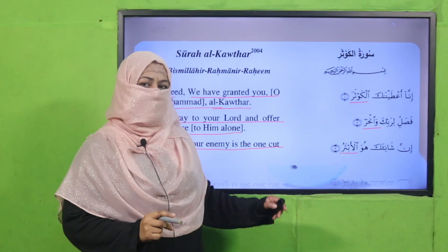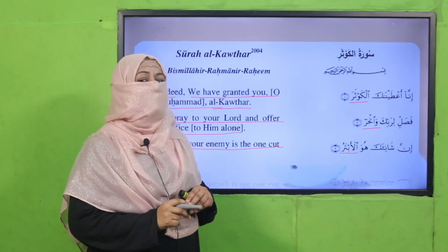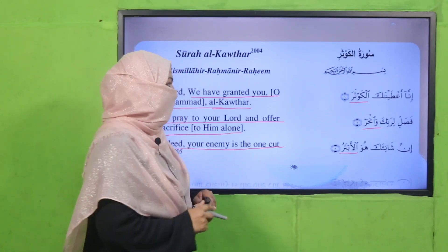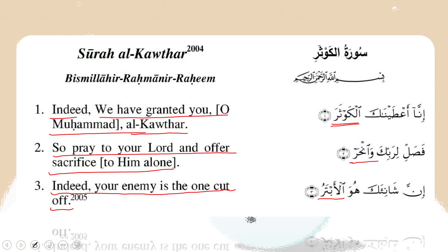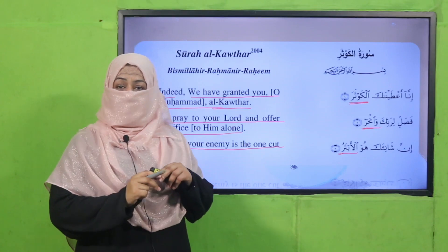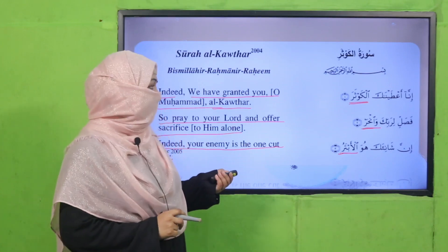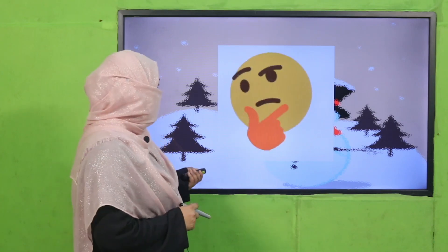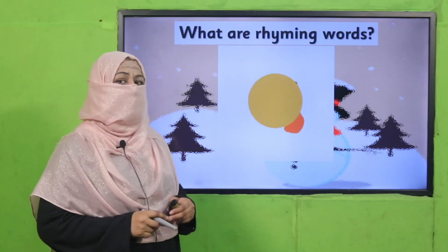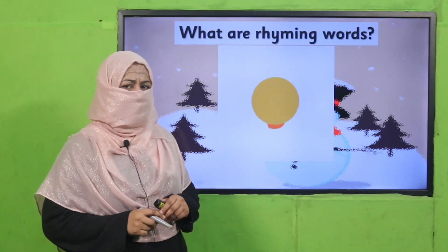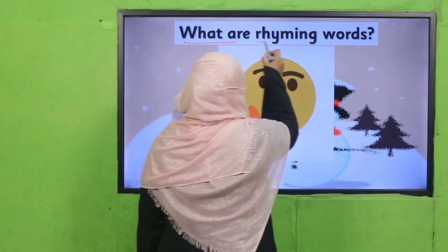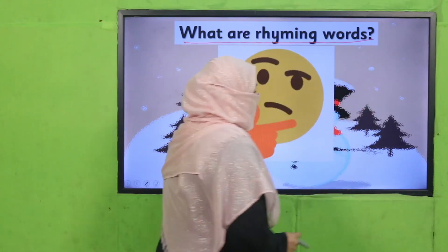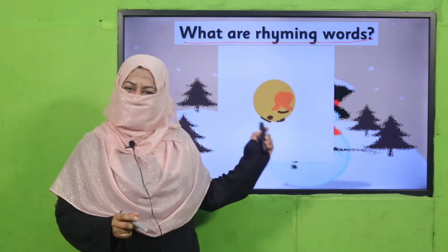Now my dear students, look at these words: 'Khauffer,' 'one her,' 'abuter.' When we say these words, they have the same ending sound, right? Such type of words — in English we also have words which have same ending sounds. So remember, the words which have same ending sound — what do we call them? What are rhyming words?